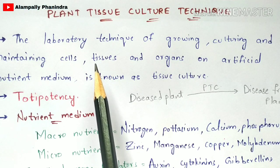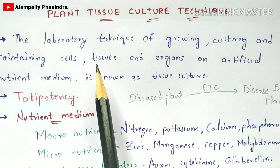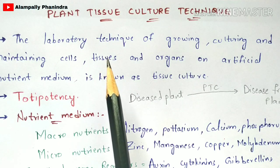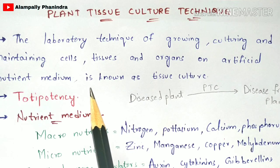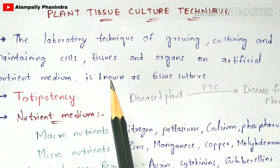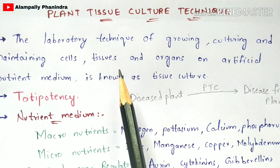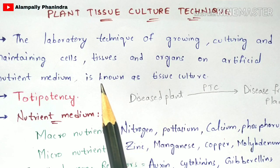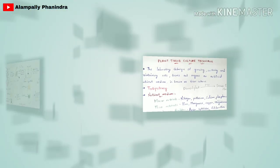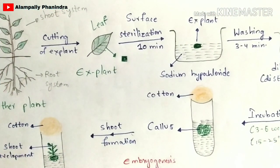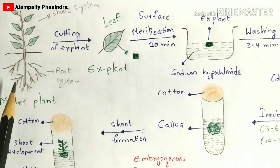I'm not going to explain the definition first — I'm going to explain the procedure first, because if I explain the procedure, the definition will be easily understandable. So let us enter into the protocol of plant tissue culture technique. The first step is the selection of a mother plant.